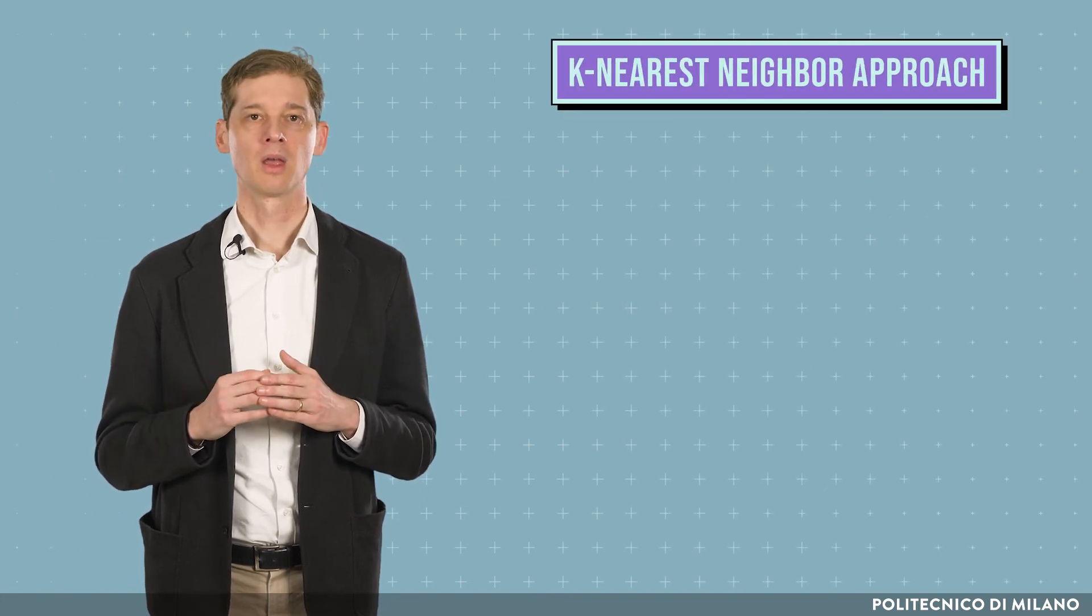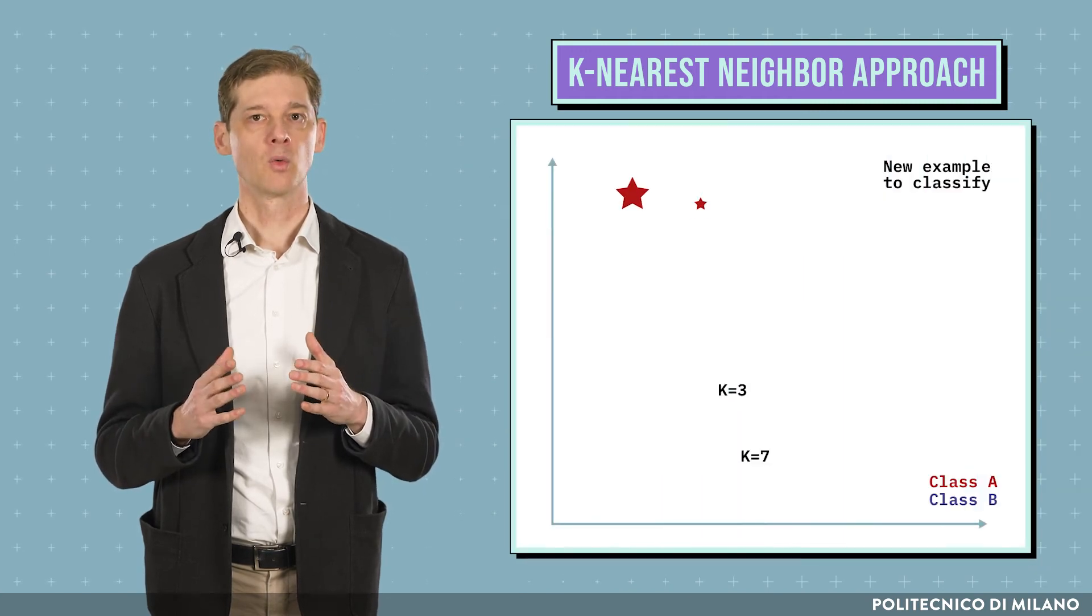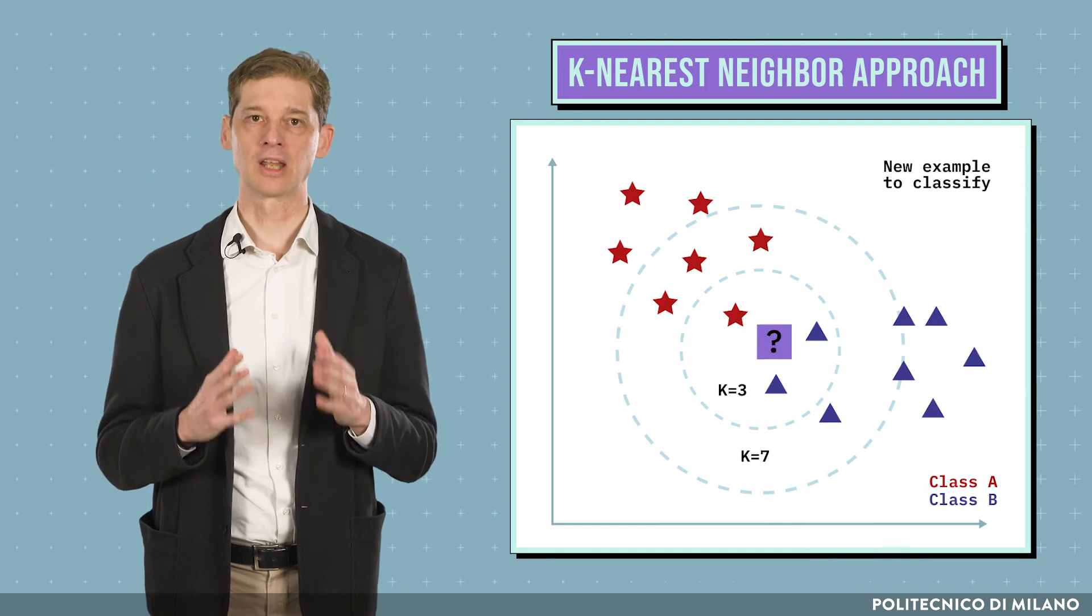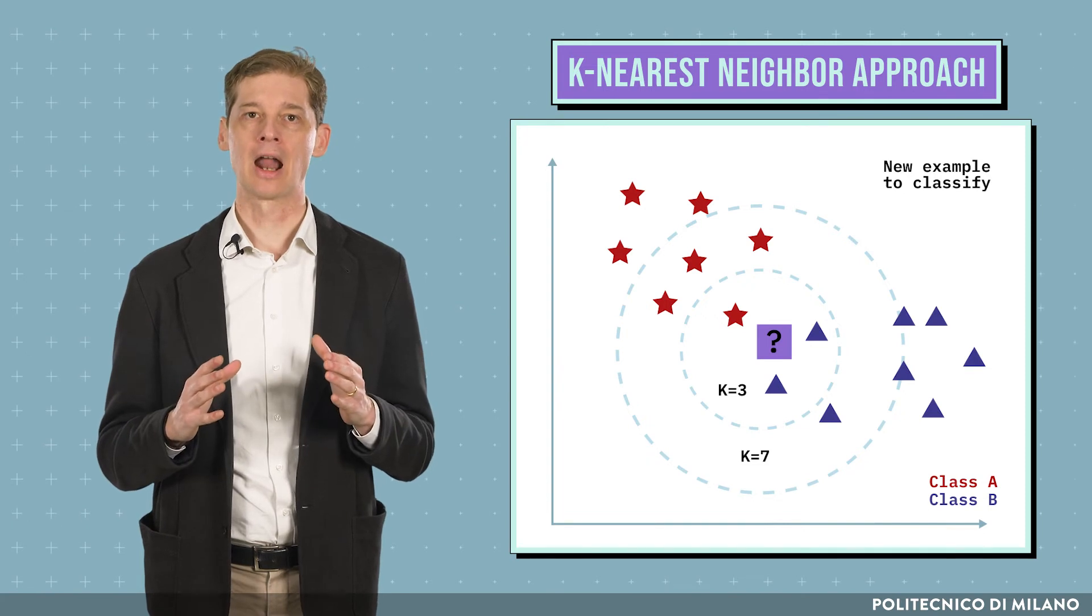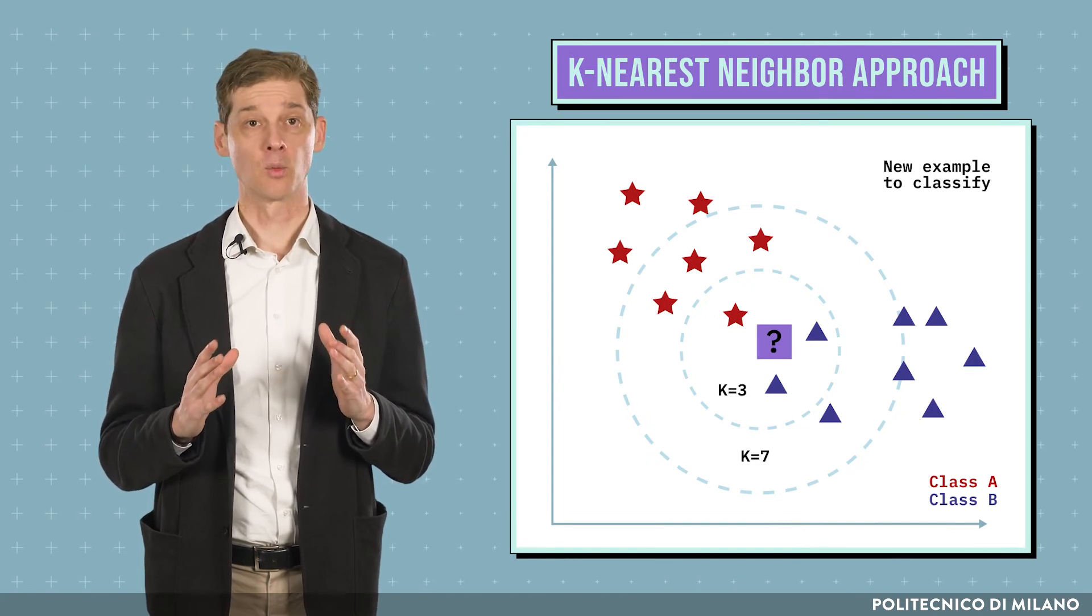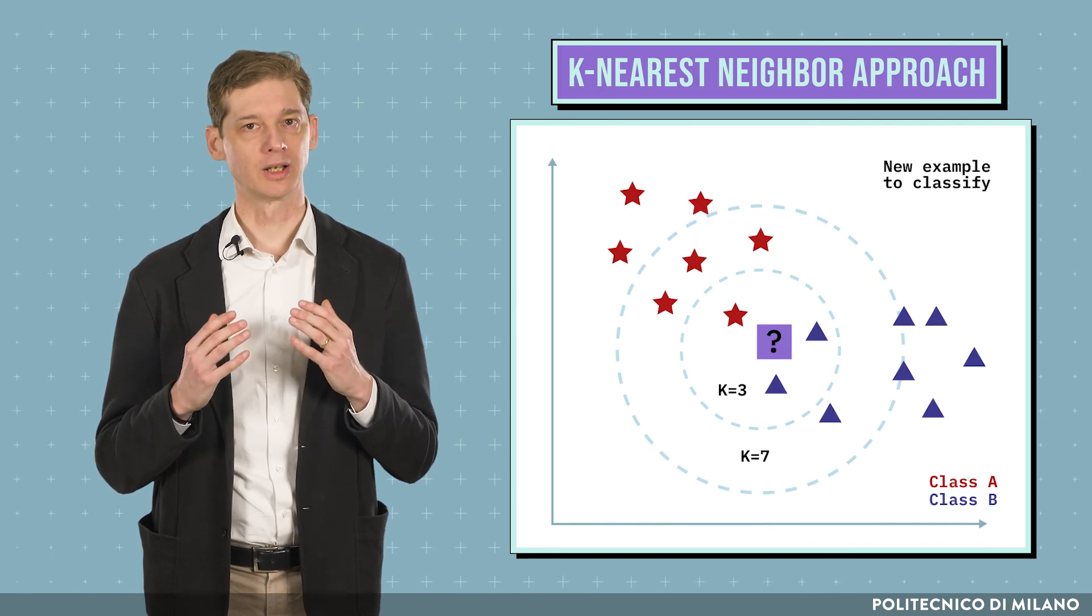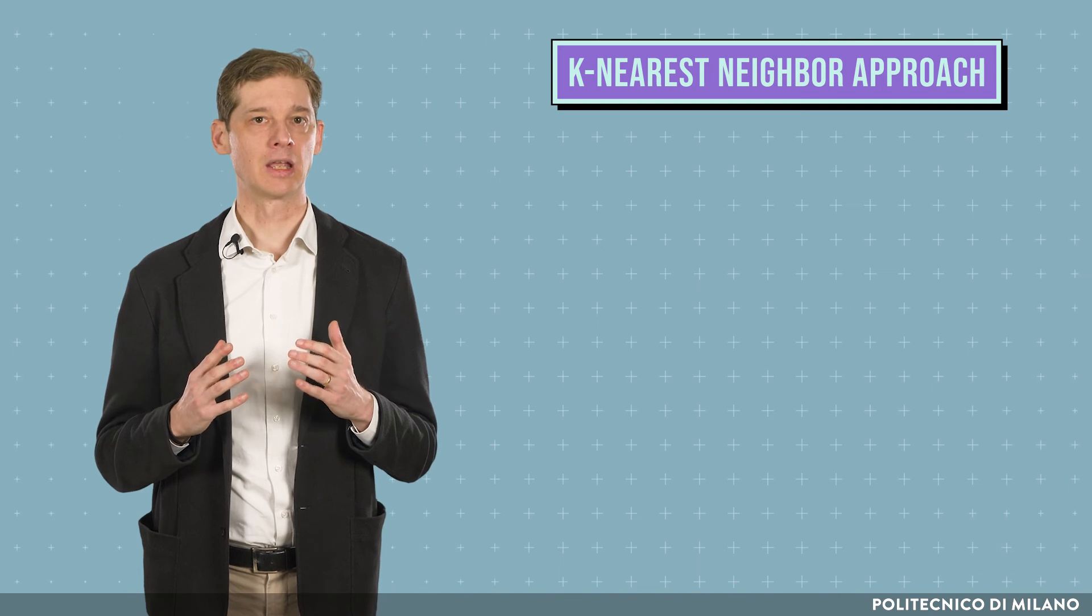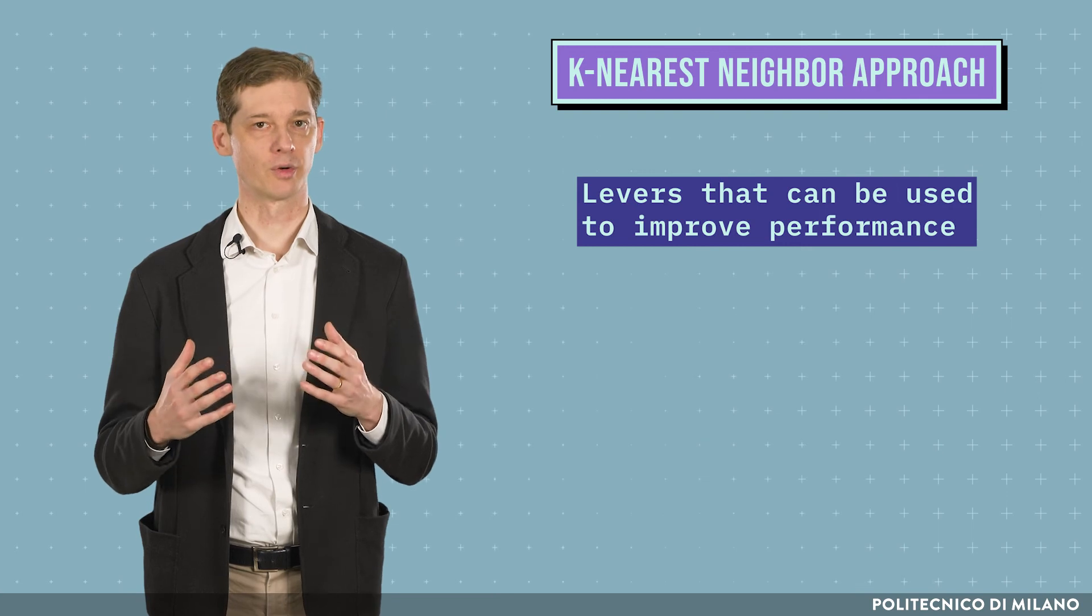Let's consider, for instance, the k-nearest neighbor approach. Whenever we need a new prediction for a given input point, we need to scan the training dataset in search for the k-closest training samples. And, if we have a regression problem, we will average their output values. Otherwise, if we have a classification problem, we will predict the most voted class. The choices of the parameter k and of the metric for computing the distances are the levers that can be used to improve performance.